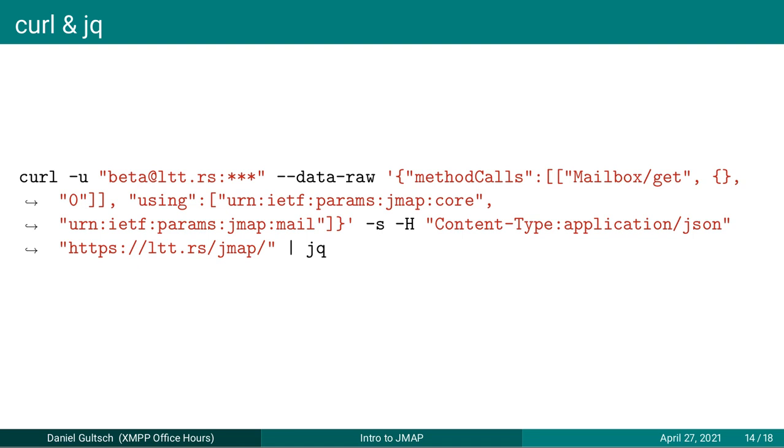Q: For WebSockets, wouldn't you need the IMAP-style request/response ID tracking? A: Yes — the WebSockets syntax is slightly enhanced. You take the JSON and add an additional ID field and a type parameter, because you can also send push notifications over the WebSocket connection. So it's the same JSON structure but with two additional parameters to handle the tracking.